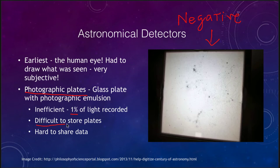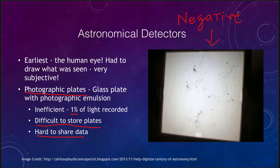It was also difficult to store photographic plates — they had to be kept under climate-controlled conditions because heat or cold could damage them and ruin the images. It was also hard to share the data, since these are glass plates; if you wanted to share them with an astronomer across the country, you would have to physically send the plate. Of course, we have now digitized many photographic plates so they can be shared more easily, but plates were the primary source for astronomical photographs for many decades.